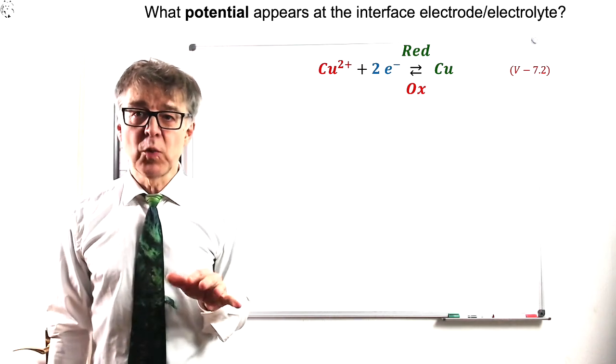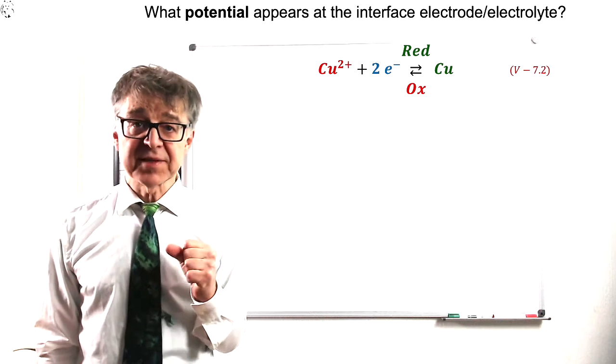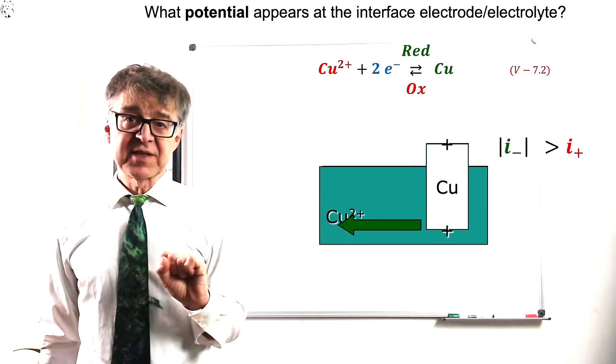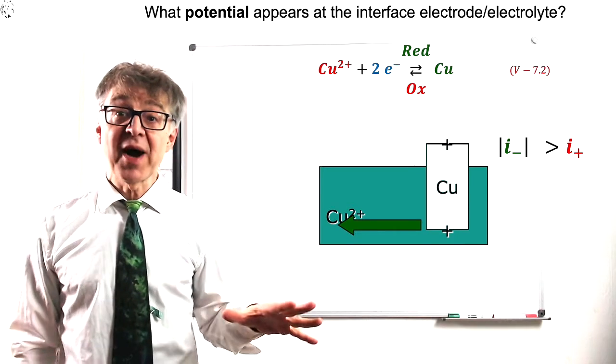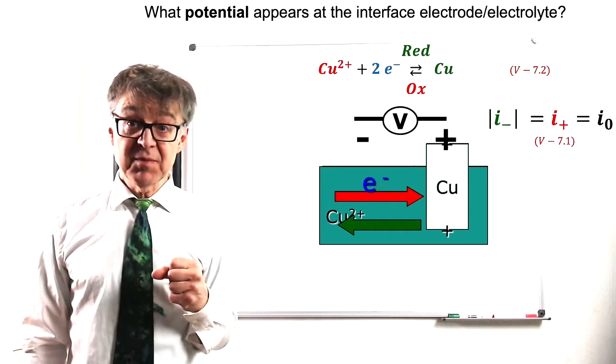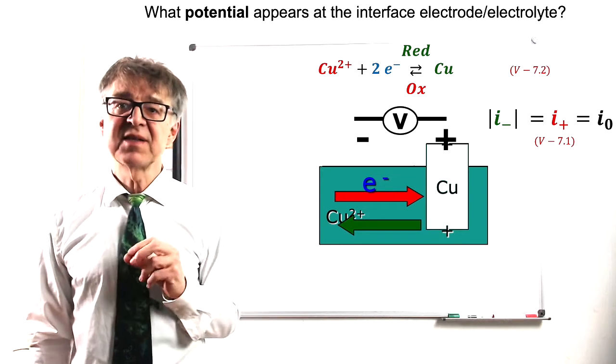Copper is a noble metal, so with a copper electrode the equilibrium lies to the right. When copper metal is immersed into a copper chloride solution, at first the cathodic reaction will be predominant and copper ions will be consumed. So after having reached equilibrium, the copper will be positively charged and the electrolyte is negatively charged.